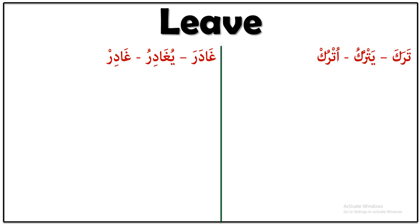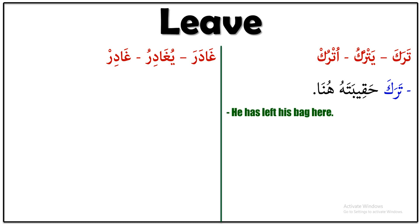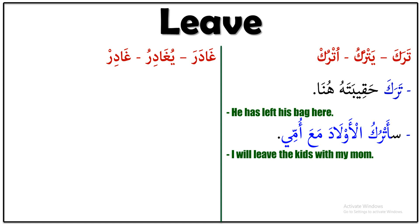Let's see examples for ترك. ترك حقيبته هنا — which means 'he has left his bag here.' ترك حقيبته هنا — his bag here. It means 'I will leave the kids' — الأولاد مع أمي — 'with my mom.' I will leave the kids with my mom.